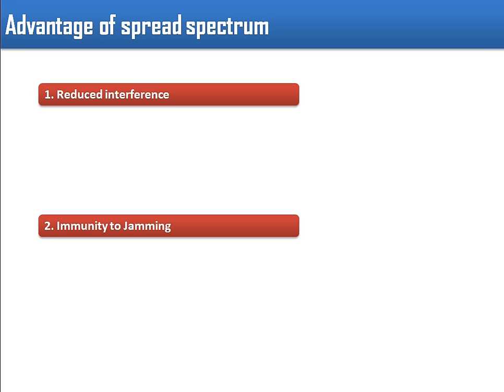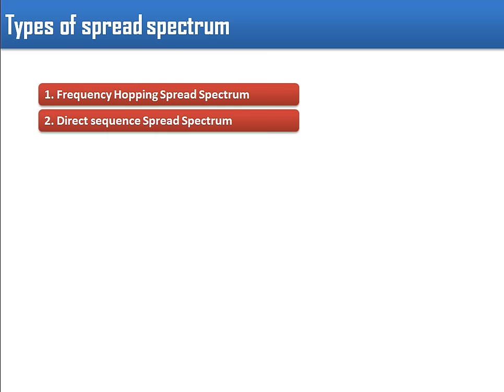The advantages of spread spectrum technology: First is reduced interference, because we are no longer using a constant frequency. If there is interference on one frequency we are using, that interference will only last for the duration we use that frequency — as soon as we switch to another frequency, the interference is gone. Second is immunity to jamming, because in order to jam a communication the frequency has to be known, but in spread spectrum multiple frequencies are in use, making jamming very hard.